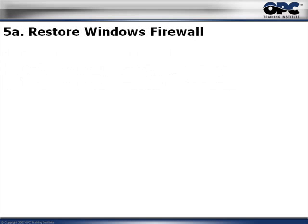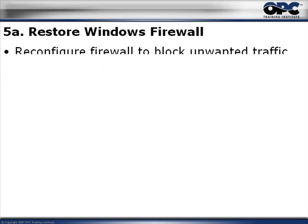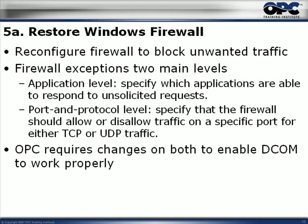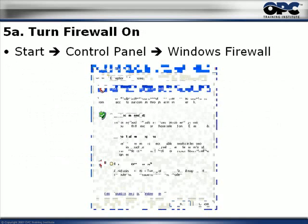Let's go to the first part, which is to restore the Windows firewall. It's fairly easy — all we need to do is put the firewall back up and it's going to block unwanted traffic. But remember that this time, we need to provide exceptions on two levels: first, the application level, and second, the port and protocol level. Don't forget that for DCOM you need port number 135. OPC requires changes on both application level and port and protocol level to make sure DCOM is working properly.